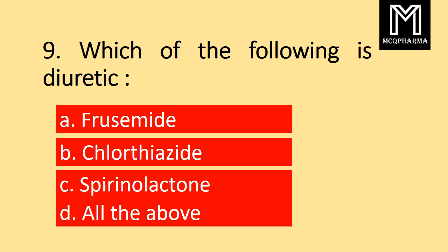Question number 9. Which of the following is a Diuretic? Option A Frusemide, B Chlorothiazide, C Spironolactone, D all the above. Correct answer: Option D all the above.